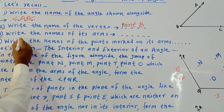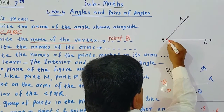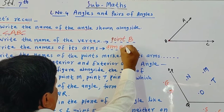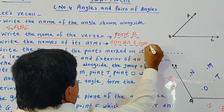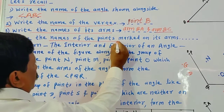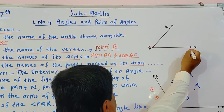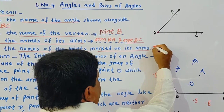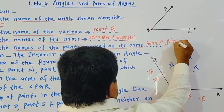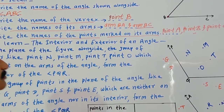The third point is: write the names of its arms. The arms are side BA and side BC. So write here: arm BA and arm BC. Number 4: write the names of the points marked on its arms. The points are point A, point B, and point C — all three are on the arms of the angle. Actually B is the vertex, but it is also coming on the sides.